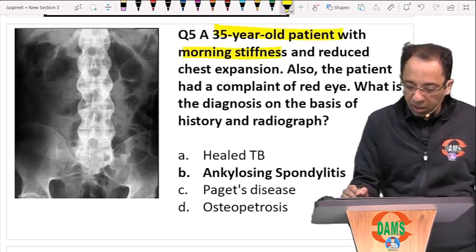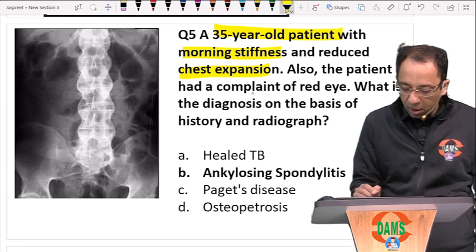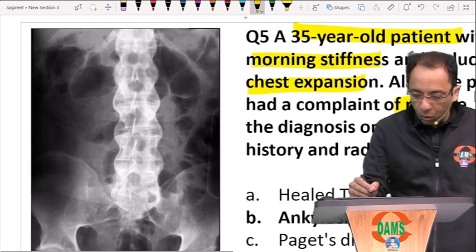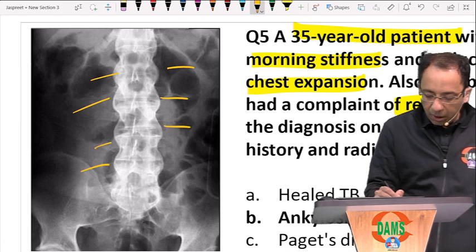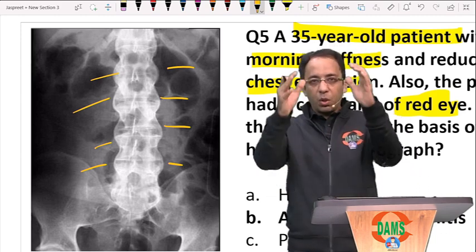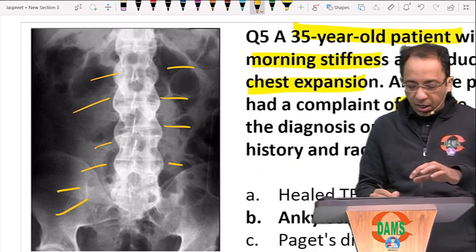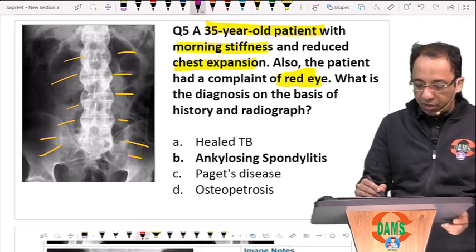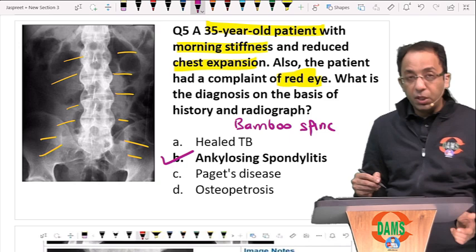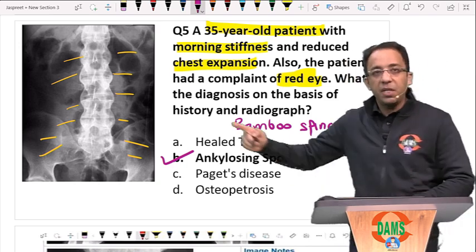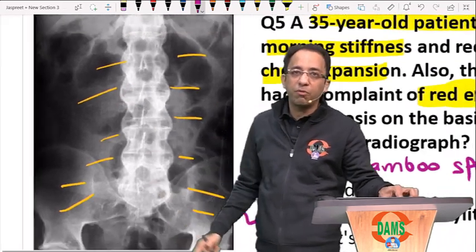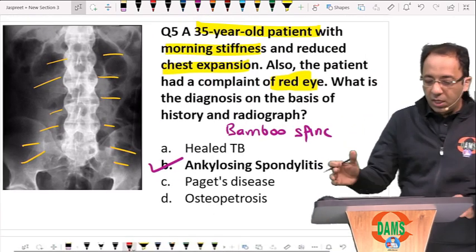Another predicted question: morning stiffness in a 35-year-old, reduced chest expansion, red eye (uveitis), stiffness of the back. The X-ray clearly shows syndesmophytes — the outer fibers of the disc are ossified — giving rise to a fused spine. SI joints are obliterated. These are all features of ankylosing spondylitis, also called bamboo spine. If the interspinous ligament is ossified, we call it the dagger sign.